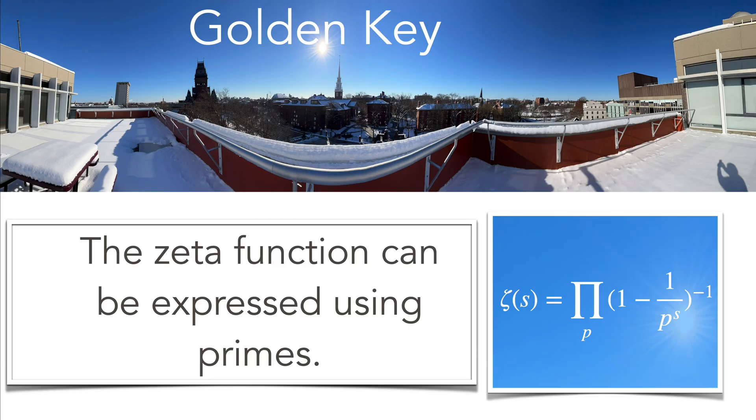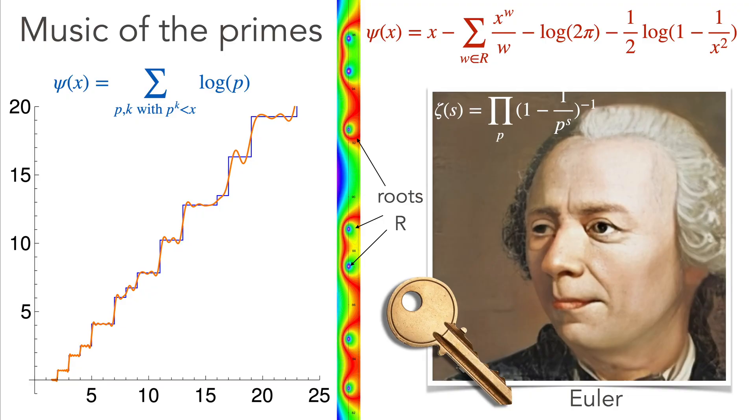Finally, back to the zeta function, which is an exciting function because it has relations with prime numbers. The golden key formula gives you a relation between the prime numbers and the zeta function. There are more deep relations like the music of the primes formula, which allows you to express a distribution of primes using the roots of the zeta function.